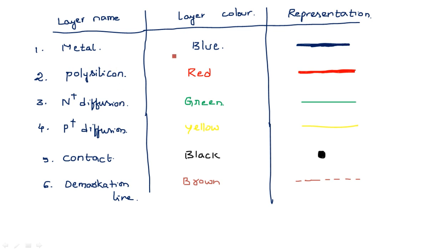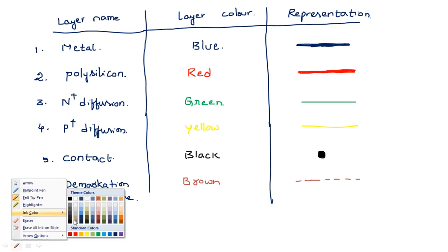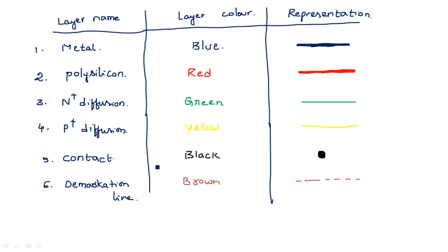To summarize the layers: the metal layer is in blue color, drawn as a horizontal or vertical line. Polysilicon is in red color. N-plus diffusion is in green color. P-plus diffusion is in yellow color. The contact is in black color represented as a circle. And the demarcation line is in brown color drawn as a dashed line.